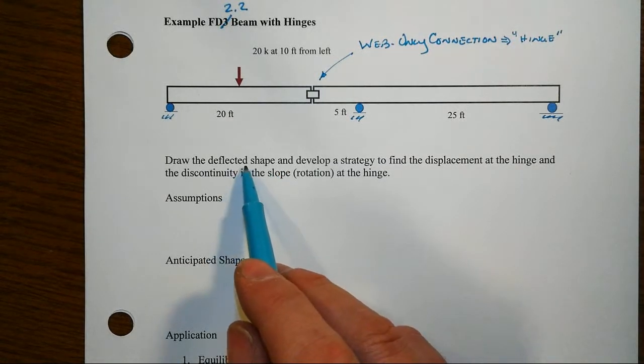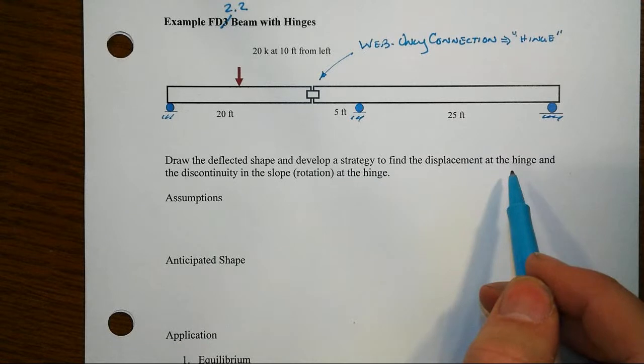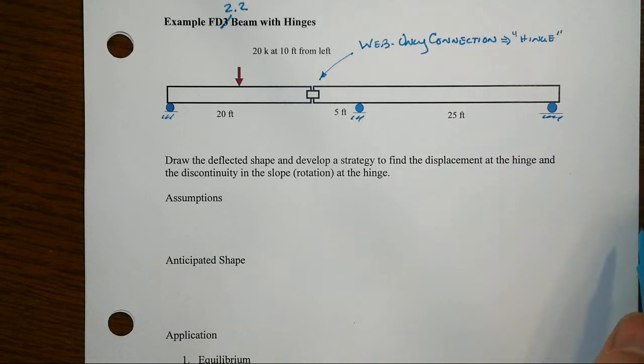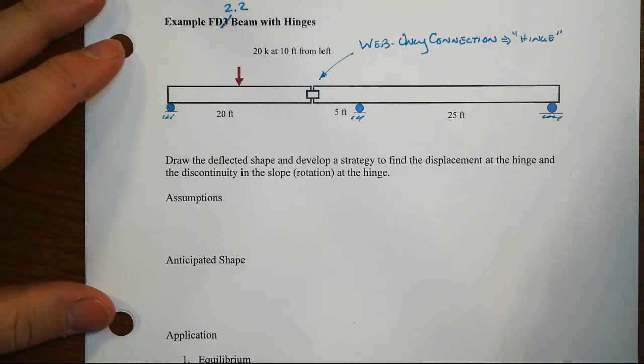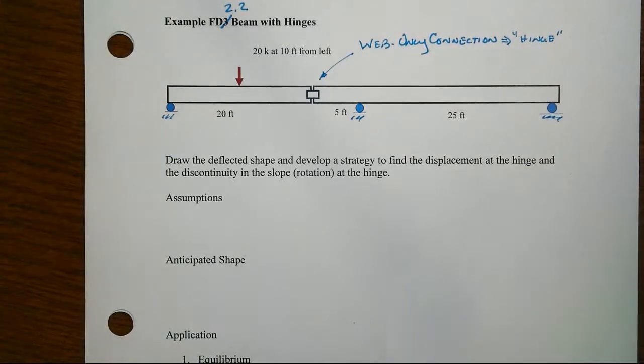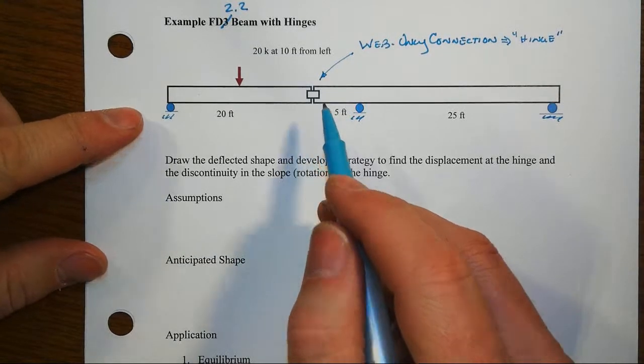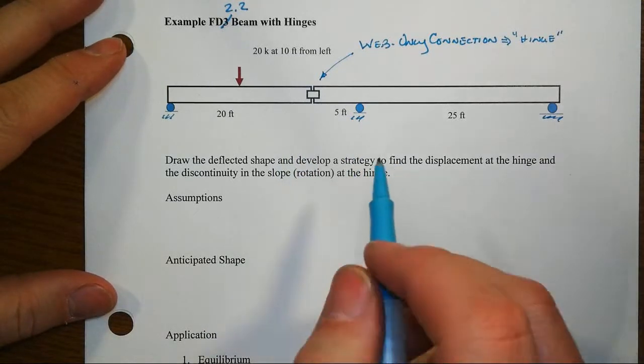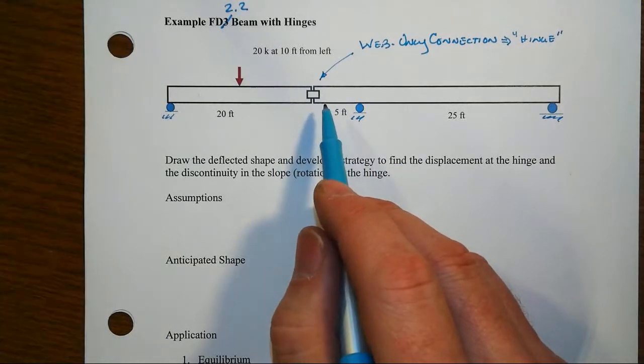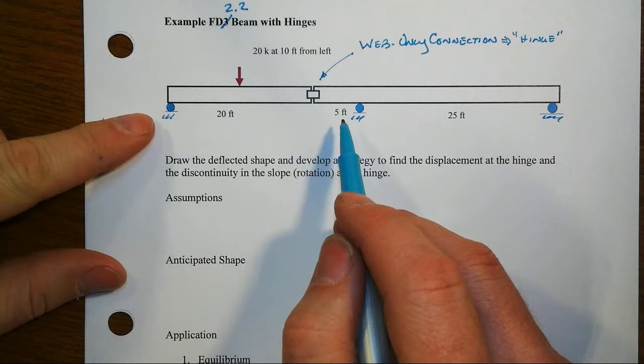Now what we're asked to do is draw the deflected shape and develop a strategy to find the displacement at the hinge and the discontinuity in the slope, or that is the discontinuity in the rotation at the hinge. So we're only going to do the basic element of the strategizing and not so much the numerical application for this particular example. We will do some numbers, particularly for the equilibrium to get you going.